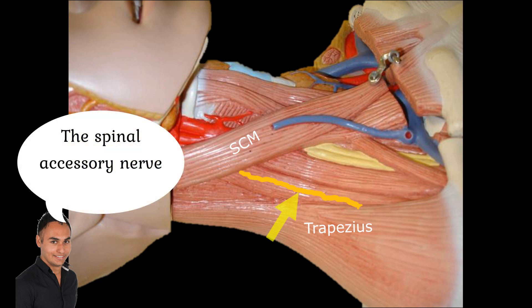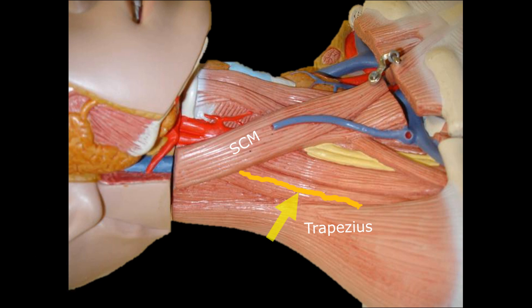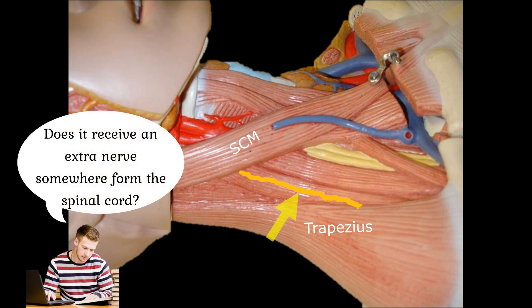This is the spinal accessory nerve. Why do we call it the spinal accessory nerve? It is a motor nerve. Actually, it arises from spinal cord segments.